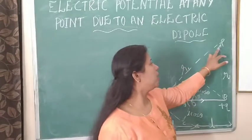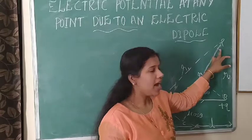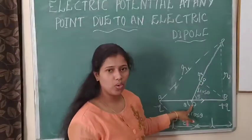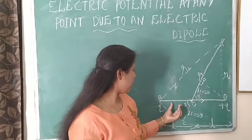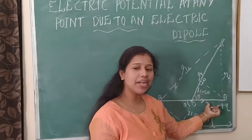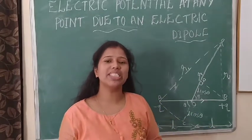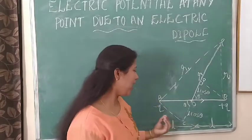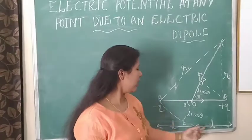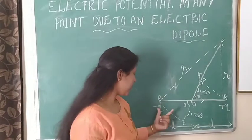Consider a point P at distance R from the center O of an electric dipole AB. We know that an electric dipole means a pair of equal and opposite charges separated by a distance 2L. Plus charge here and minus charge on the other side.